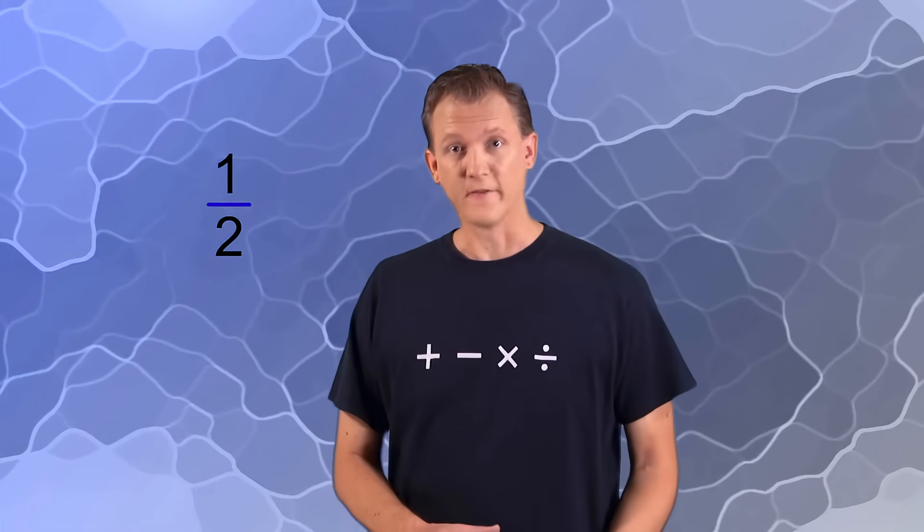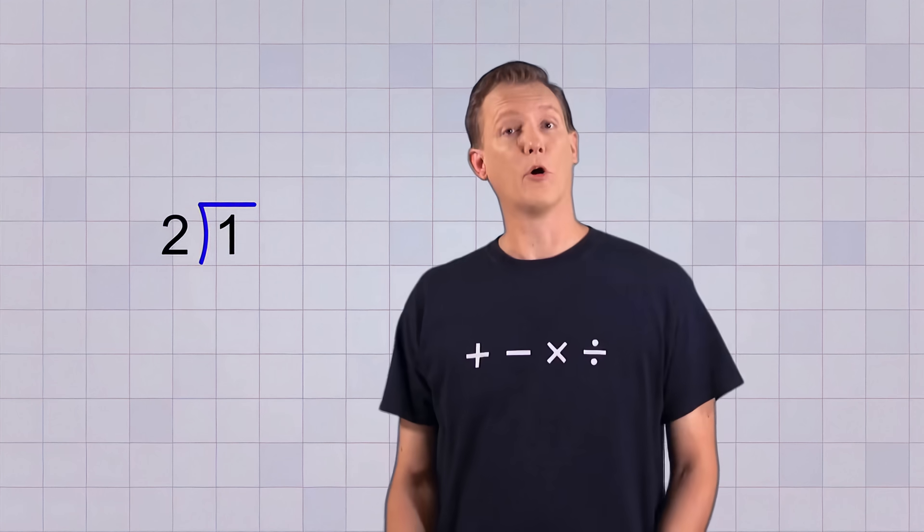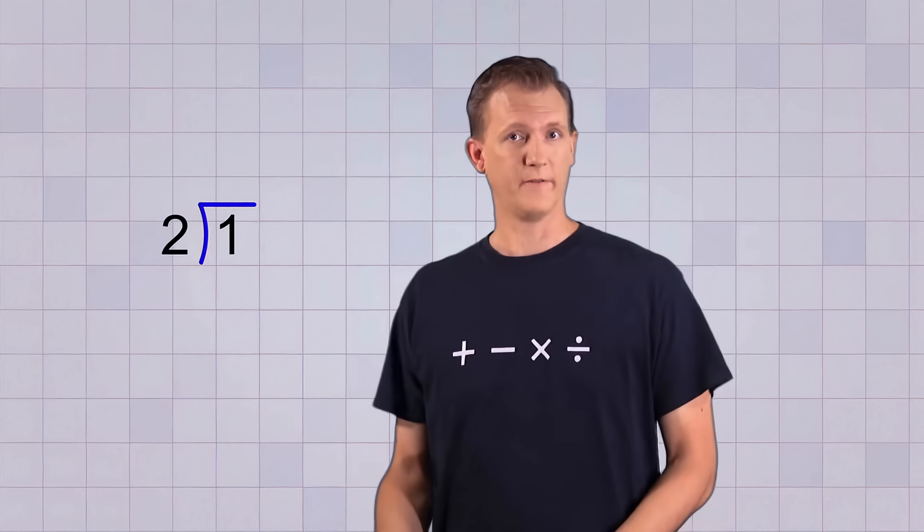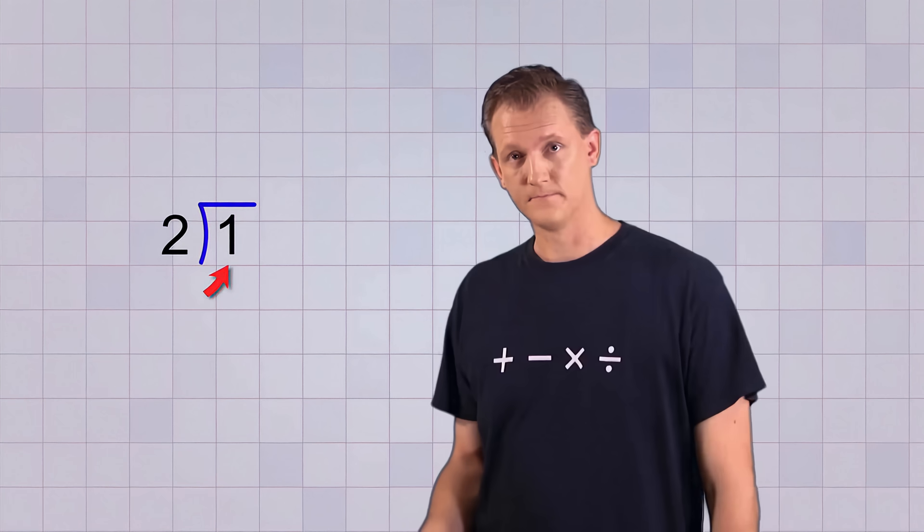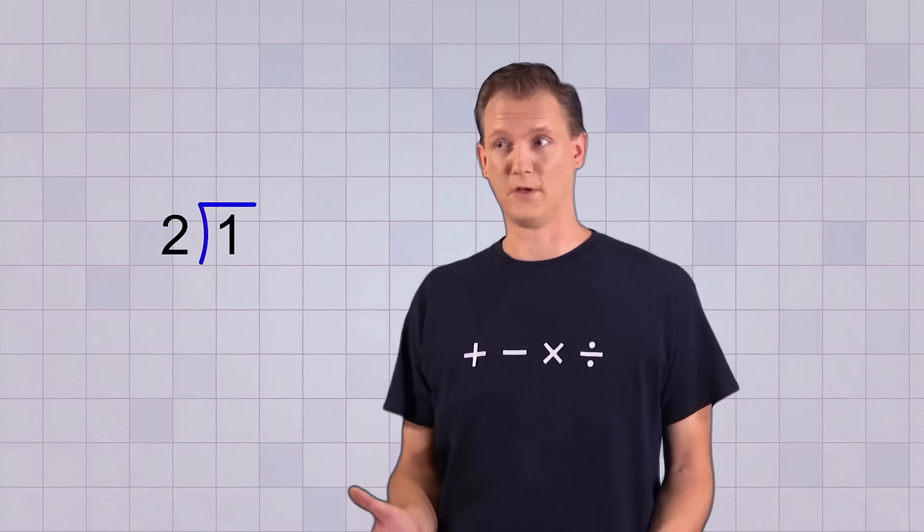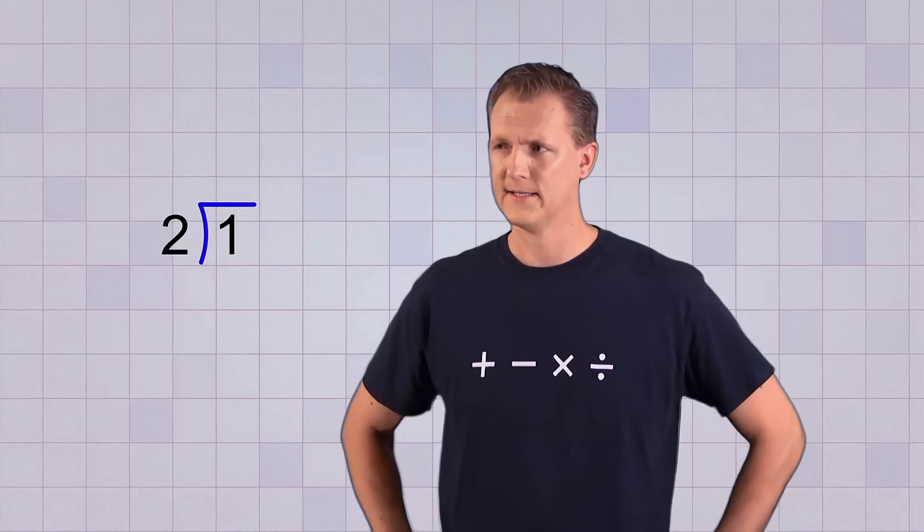Let's take the fraction 1 half and convert it into a regular division problem with this division symbol. Now all we have to do is follow the procedure for division. We just see how many times this 2 divides into this 1. Uh-oh, it won't divide any times. 2 is bigger than 1. Looks like we're going to need some help.